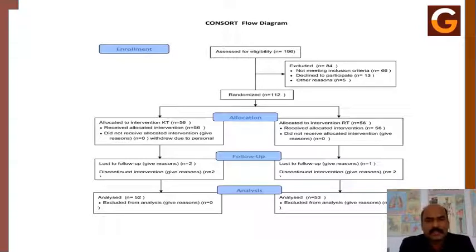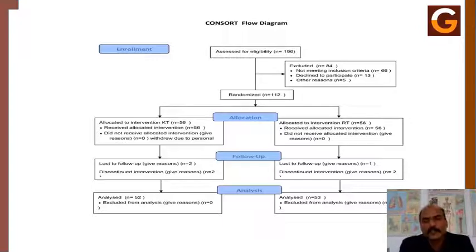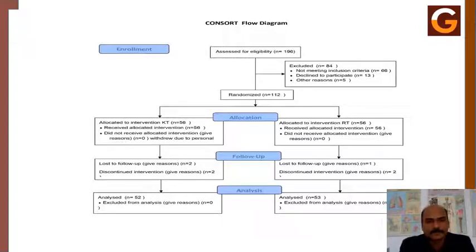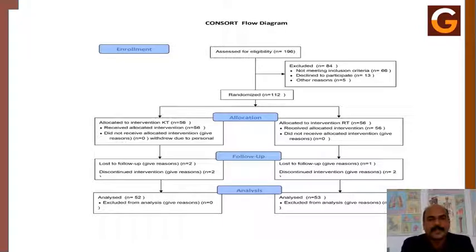In the study flow, 196 subjects were screened and found eligible. After that, 84 subjects were excluded: 66 did not meet the inclusion criteria, 13 declined to participate, and 5 were excluded for other reasons. This left 112 subjects divided into two groups: Group A — kinesio tape (n=56) and Group B — rigid tape (n=56). At the end of the study, there were 4 dropouts in the kinesio tape group and 3 dropouts in the rigid tape group. Pain pressure thresholds were measured at seven locations and compared between groups.